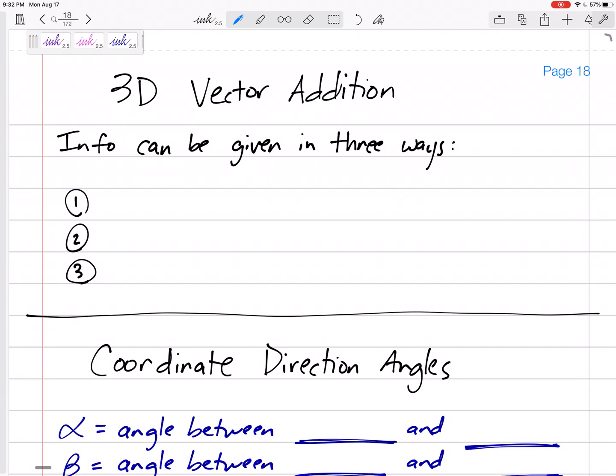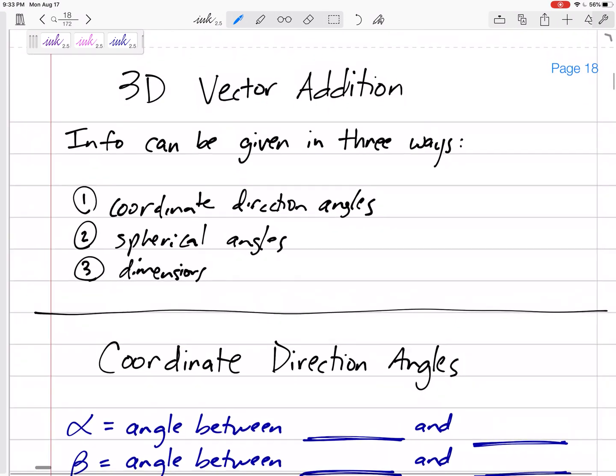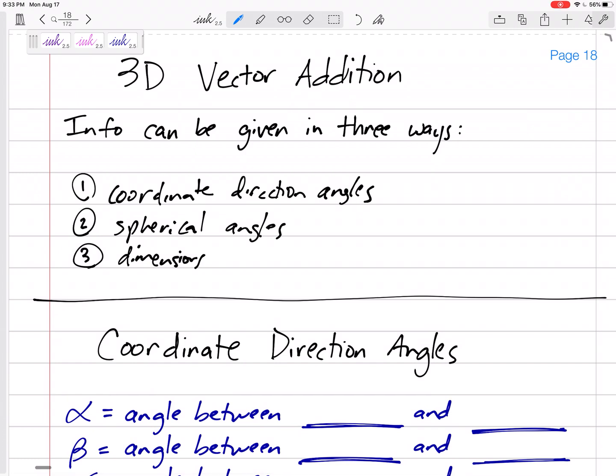All right, so here we go. 3D vectors - the angles can be given in three different ways. They can be given as coordinate direction angles, they could be given as spherical angles, or instead of giving you any angles, they might just give you some dimensions and from that we can find the angles. It could be given in a mixture of these. So let's talk about each of these three individually. In the very end, we'll put them all together. Let's start with coordinate direction angles because they're the easiest.